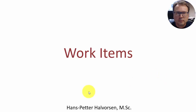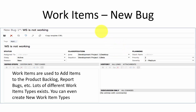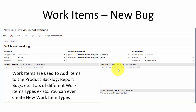In order to track bugs in Visual Studio Team Services you need to use the work items feature. Here you see an example of how we use the work item of type bug in order to report a new bug in the system. So let's go to Visual Studio Team Services and demonstrate this.